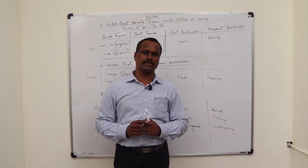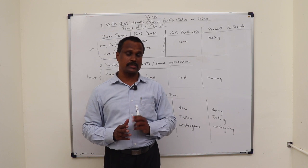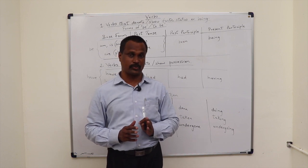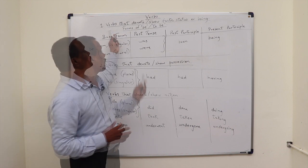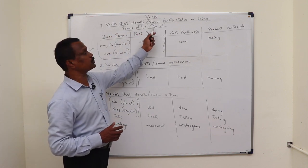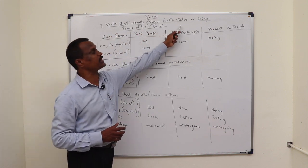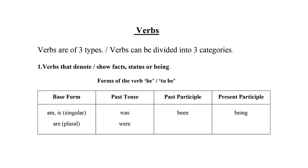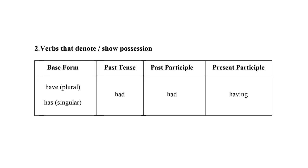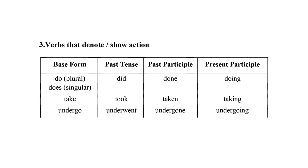Verbs are of three types. Or put in other words, verbs can be divided into three categories. Number one, verbs that denote or show facts, status or being. In a single word, verbs that come in the form of being. Number two, verbs that denote or show position, or verbs in the form of have. Number three, verbs that denote or show action, or verbs that come in the form of do.